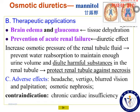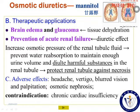This drug increases blood volume very rapidly, so it can cause adverse effects due to higher blood volume, including headache, visual blurring, palpitation, and even osmotic nephrosis. Therefore, for patients with chronic cardiac insufficiency, try not to use this drug because it can induce serious complications due to the rapid increase in blood volume. This is a contraindication for mannitol.